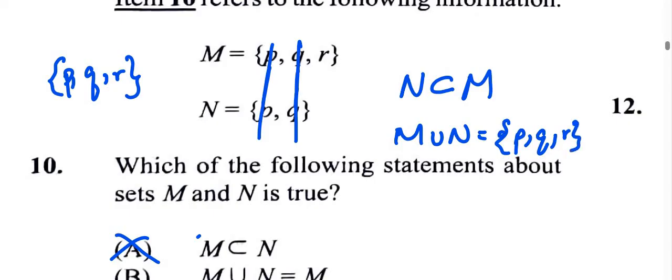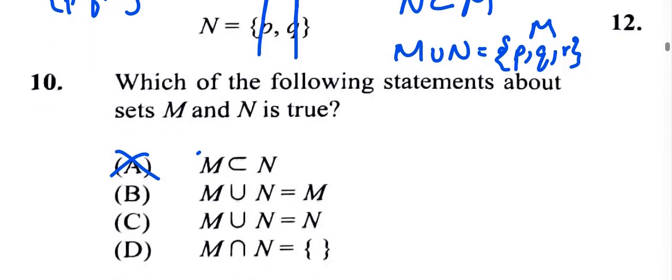And when we look at this set, it's actually set M. All right? So M union N actually gives us back set M. So option B is correct.